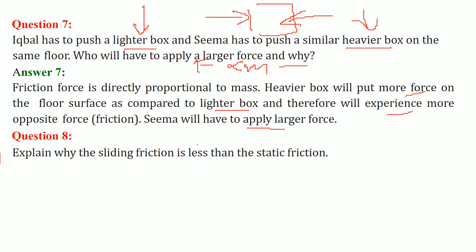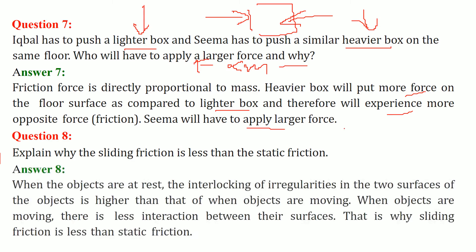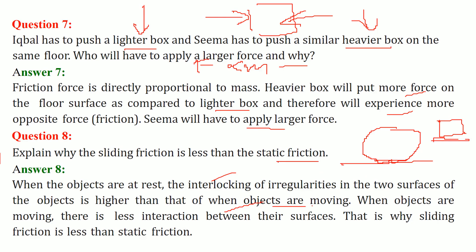Explain why sliding friction is less than static friction. When something is sliding, it is not touching the floor regularly. But in static friction, the object has grip of the surface. When objects are at rest, the interlocking of irregularities between the two surfaces is higher than when the objects are moving. When objects are moving, there is less interaction between the surfaces — that is why sliding friction is less than static friction.